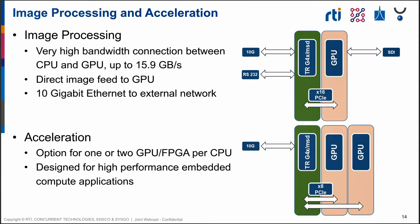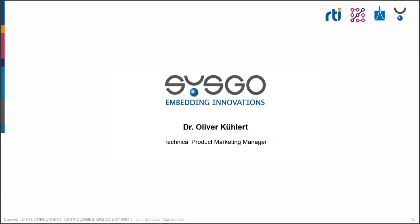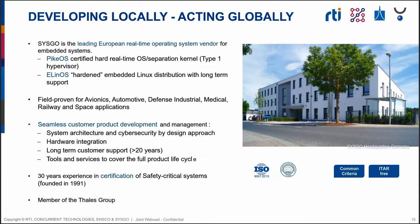I'll now hand over to Oliver at Cisco. Hello, my name is Oliver Kulert, Technical Marketing Product Manager at Cisco. We are a supplier of software for embedded devices, mostly targeted for safety and security. We started about 30 years ago with services for embedded devices and soon had our own Linux-based operating system called Elinos, with a development environment targeting system and application designers.